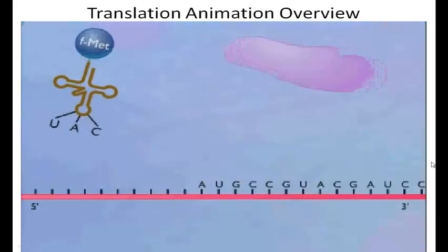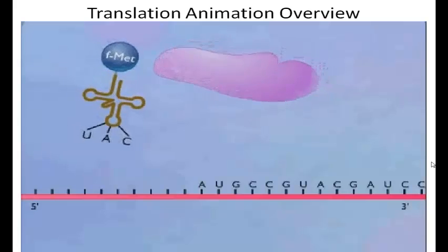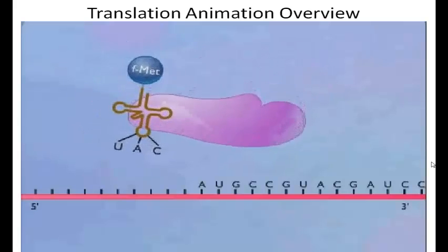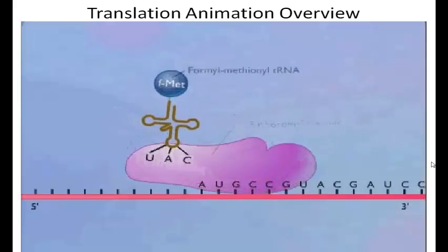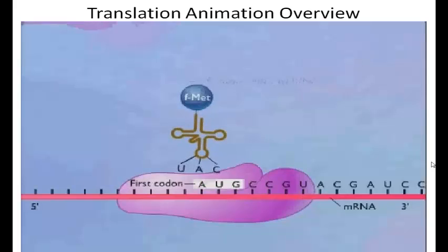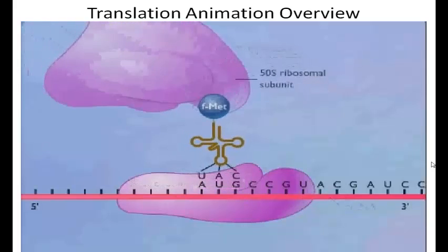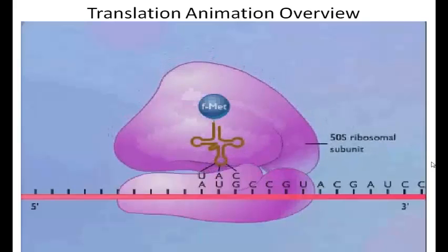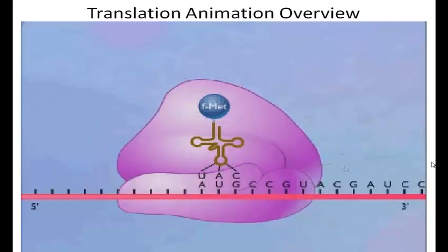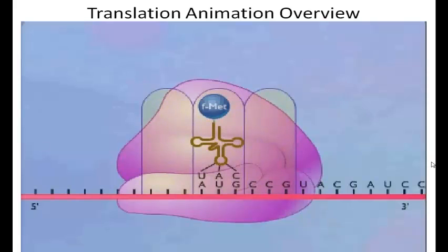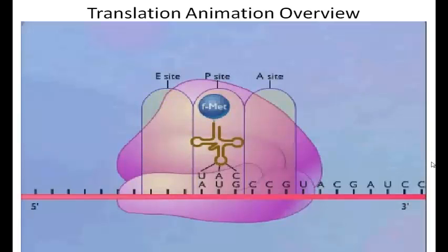In prokaryotic cells, translation is initiated by formation of an initiation complex consisting of the 30S ribosomal subunit, formyl methionyl tRNA, and messenger RNA. The 50S ribosomal subunit then joins the complex. Proteins called initiation factors are also involved but are not shown. The 70S ribosome has two sites to which transfer RNA-carrying amino acids can bind: the peptidyl or P-site, and the acceptor or A-site. There is also a third site called the exit or E-site, where transfer RNAs are released.